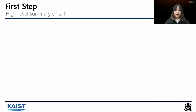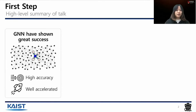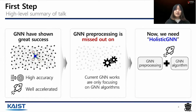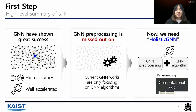Before I move on to the main talk, I'll give you a high-level summary. Graph Neural Networks have shown great success in various applications such as recommendation systems, social networks, and more. GNN can achieve higher accuracy compared to other machine learning models and can be well accelerated. However, current GNN works are only focusing on GNN algorithms and we are missing out on GNN preprocessing. It's time to use Holistic-GNN, which can accelerate both GNN preprocessing and the GNN algorithm by leveraging the computational SSD concept.